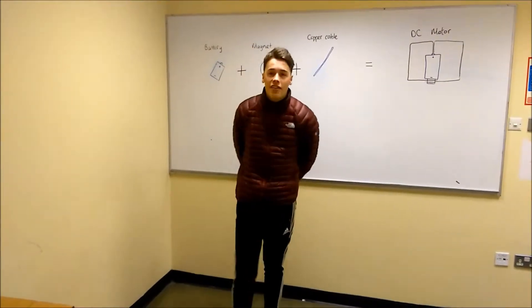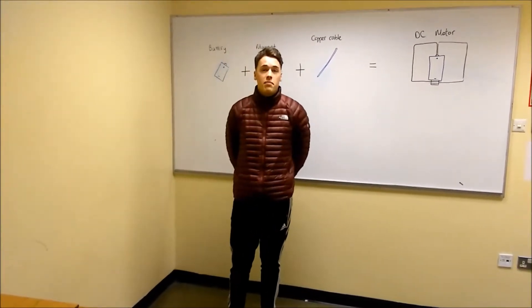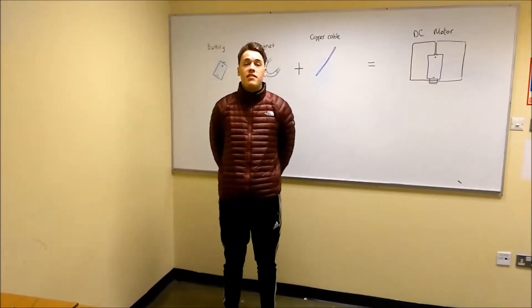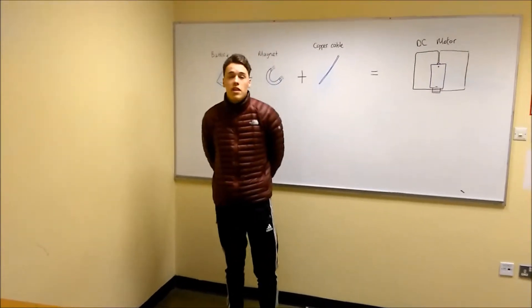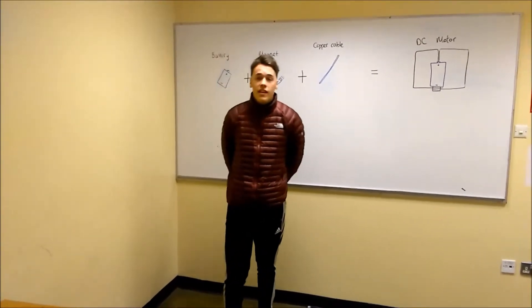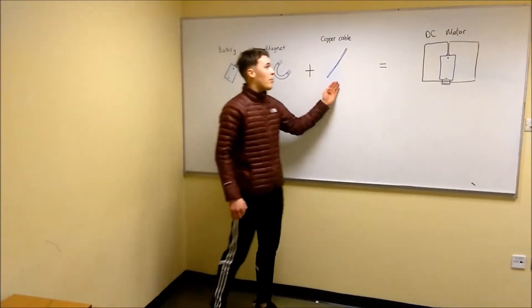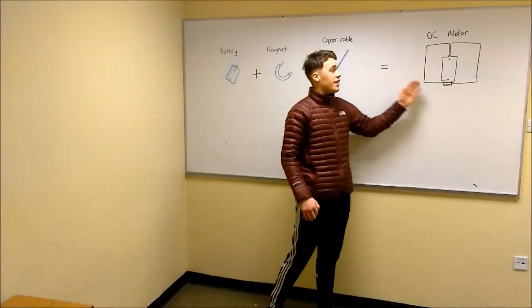Hi guys, Ayn here again. Today we are going to be doing an experiment. What's involved in this experiment is we are going to reconstruct a DC motor. We are going to use household items that can be found anywhere around the house. These items are a battery, a magnet, and a copper cable, equaling our DC motor.